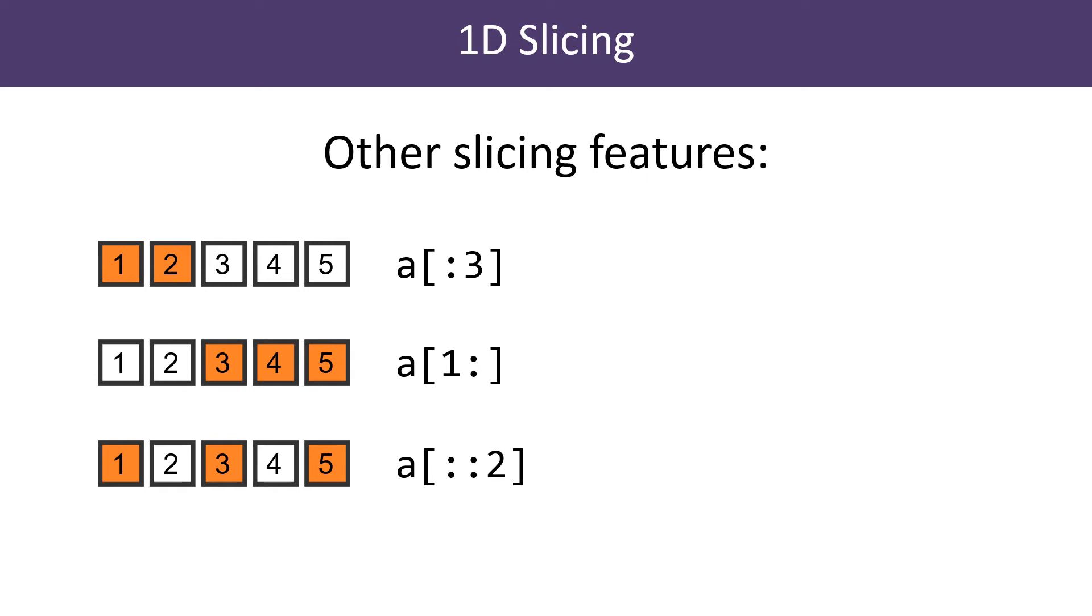And finally, we can add a third value that corresponds to a step. So [::2] slices every second element from the start of the array to the end of the array.